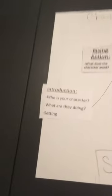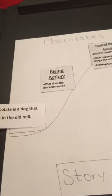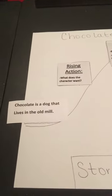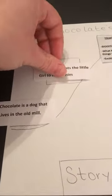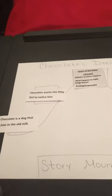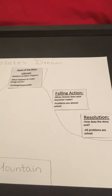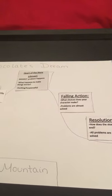So let's think about what our introduction is. Our introduction is: Chocolate is a dog that lives in the old mill. What does he want? Chocolate wants the little girl to notice him. I have filled in the first two components. Now I want you to take the last three of our story mountain and complete those using the story that we read yesterday, Chocolate's Dream.